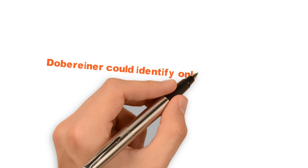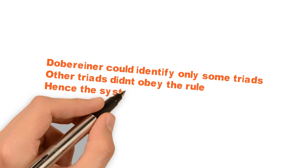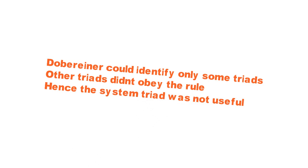This is Dobereiner's triad. But unfortunately, Dobereiner could identify only some triads. Others didn't obey the rule, and hence the triad system was not useful.